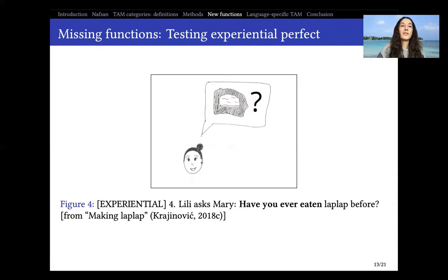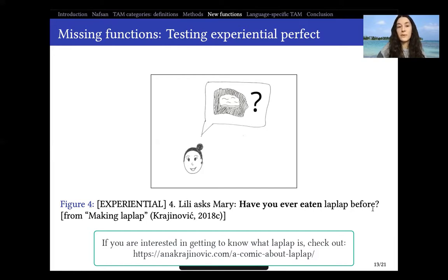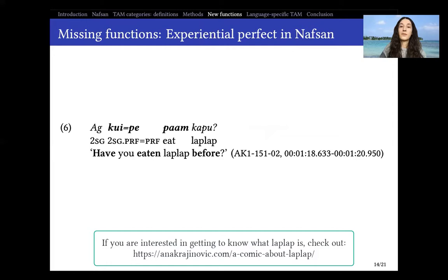Regarding the things I was interested in: in the corpus we had the uncertainty of not knowing whether experiential and universal functions were available in Nafsan. The Making Lap Lap storyboard contains a frame testing the experiential function — Lily asks Mary, 'Have you ever eaten Lap Lap before?' All speakers who produced the storyboard used perfect P in this context: 'an kupe pam kapu.' So all speakers produced P in this context, beginning to resolve that uncertainty.